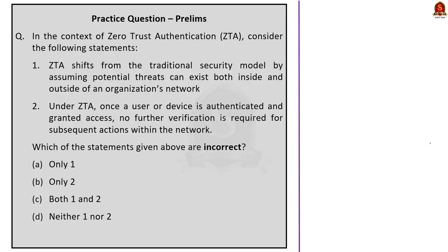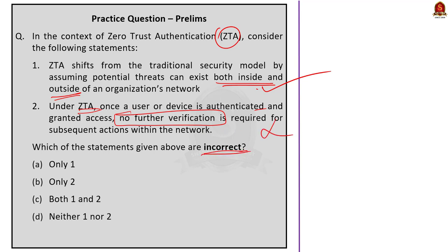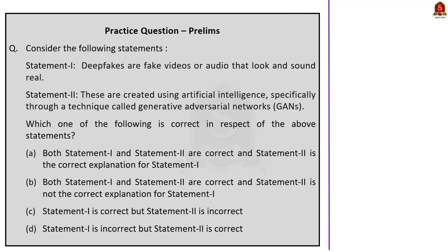In the context of zero trust authentication, consider the following statements. First: it shifts from the traditional security model by assuming potential threats can exist both inside and outside of an organization's network — this statement is correct. Second: once a user or device is authenticated and granted access, no further verification is required for subsequent actions within the network — this statement is incorrect. They are asking which statements are incorrect, so the answer is option B, only two.